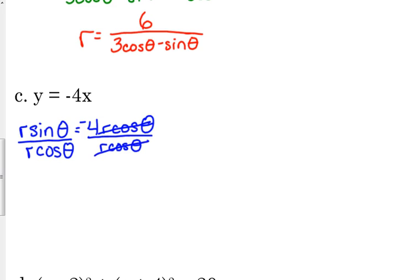Okay, so it cancels on the right side. On the left side, we've got r over r. Those cancel. What's sine over cosine? Tangent. So that says tangent of theta is equal to negative 4. This is another way to express a linear function because y equals negative 4x is also a linear function. So apparently, in the polar system, tangent of theta equals negative 4 graphs as a line. Kind of interesting.